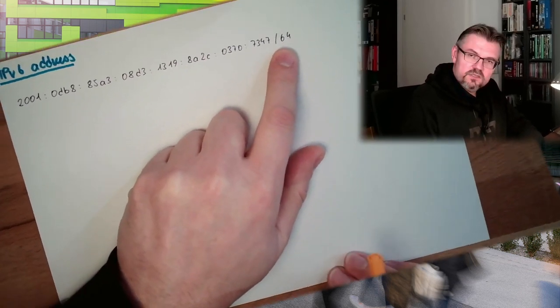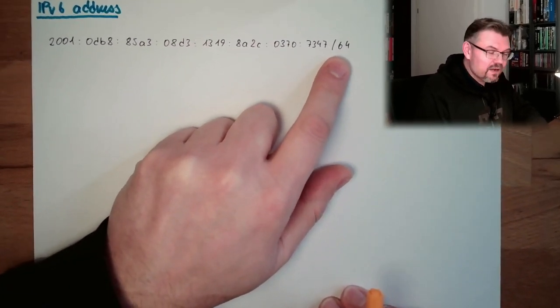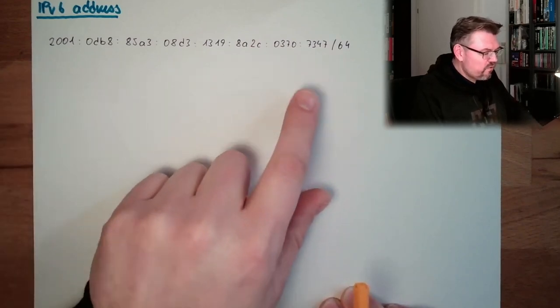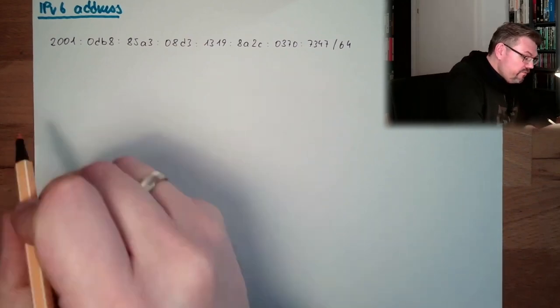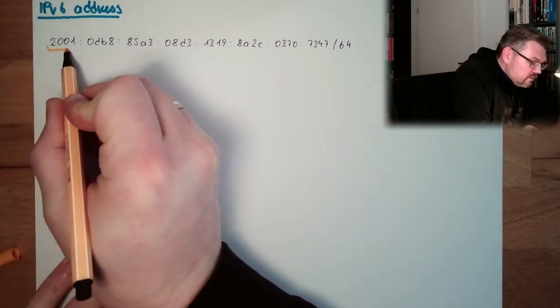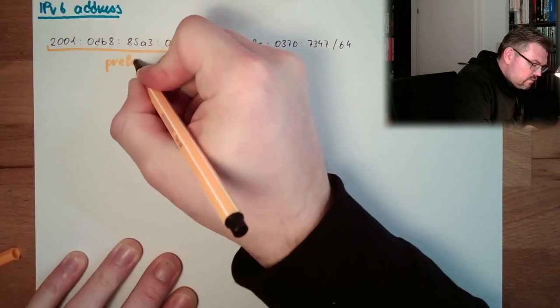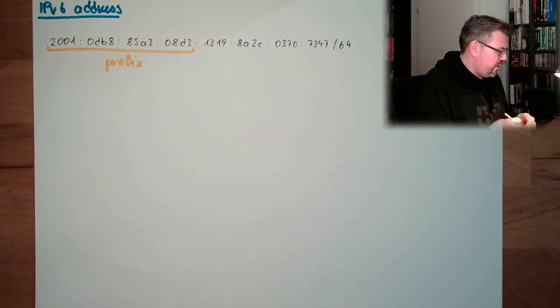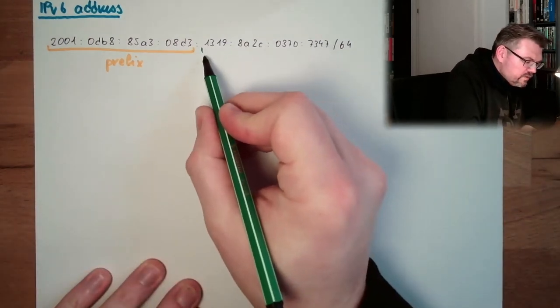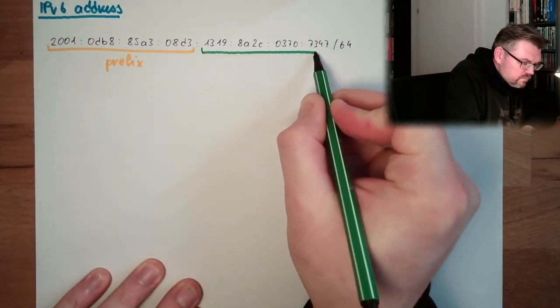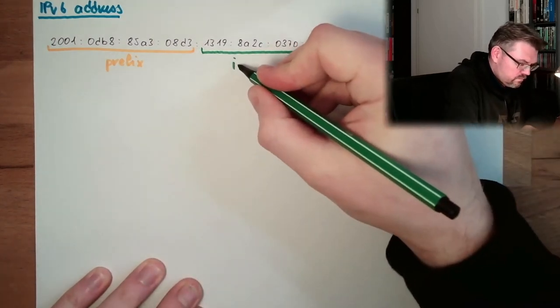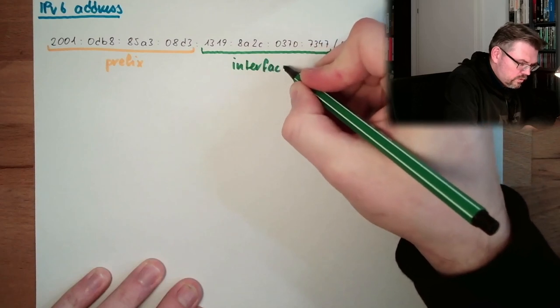Here I have written down a possible address, and this address is divided into two parts, indicated by the slash. Slash 64 means 64 bits are the prefix. So the first 64 bits — half of the 128 — those are the prefix of the address. The rest is the interface part.